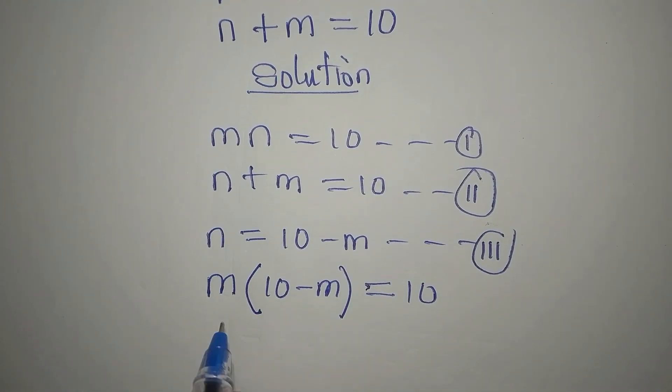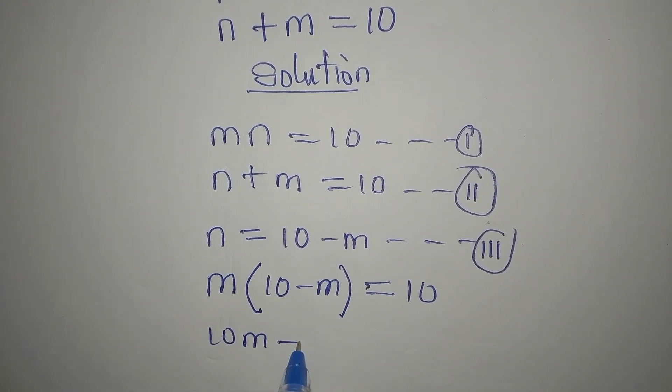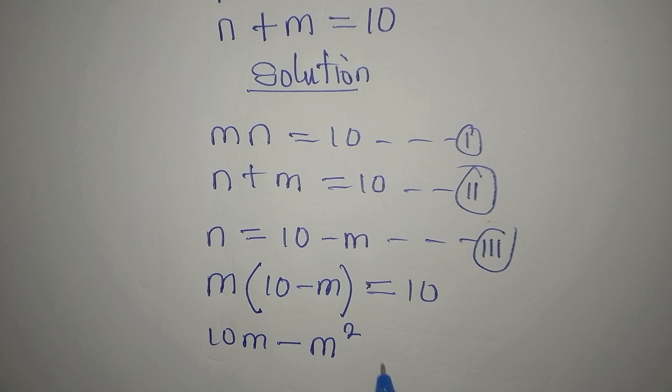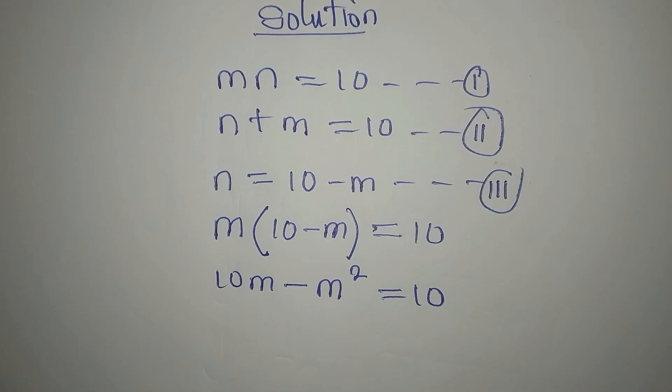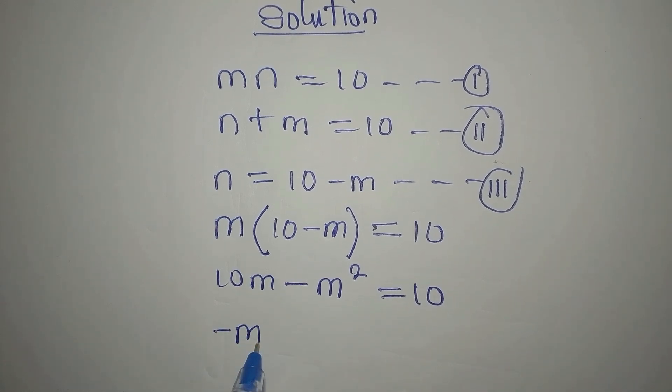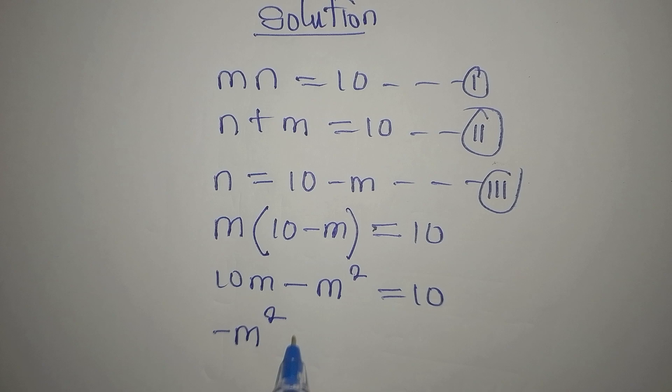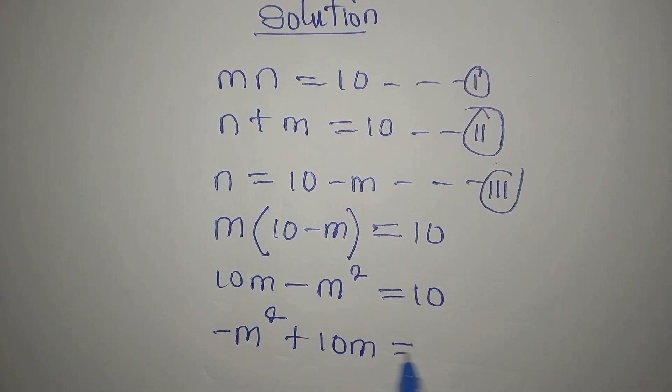Open the bracket to get 10m minus m squared equals 10. We should write the one with the highest power first. So we are picking negative m squared, then this is plus 10m, and this is equal to 10.